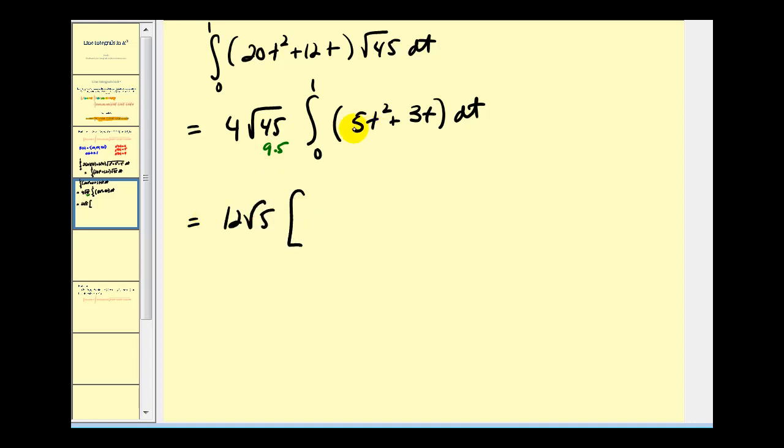Now we'll go ahead and integrate. We'll have five times t to the third over three, or five-thirds t cubed, plus three times t squared over two, or three-halves t squared.